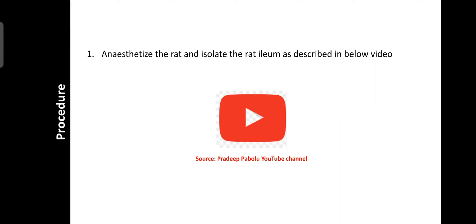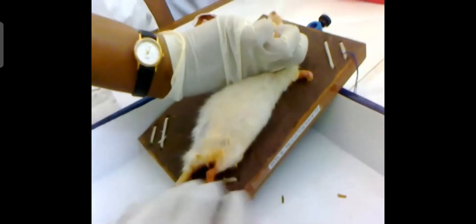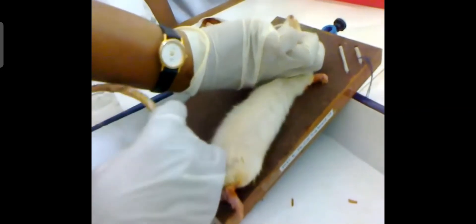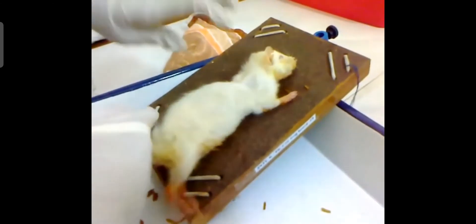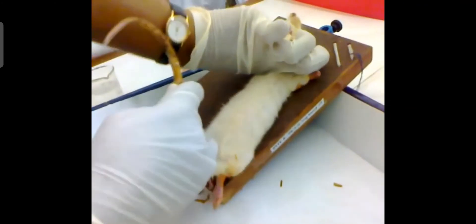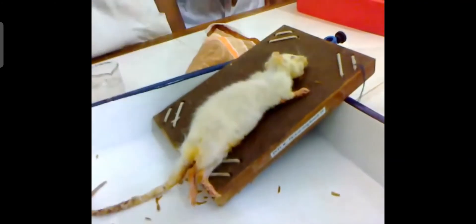Anesthetize the rat and isolate the rat ileum as described in the video. Place one hand on the rat's head and with the other hand hold the tail and pull it downward. This causes dislocation of the spinal cord, by which the rat is anesthetized. You can observe this in the video.